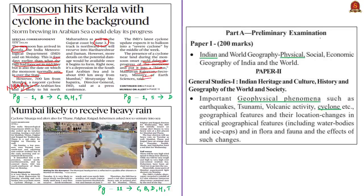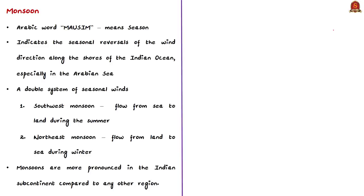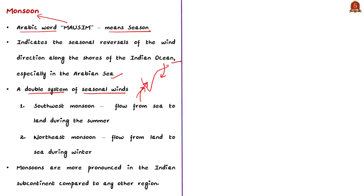The word 'monsoon' originated from the Arabic word 'mausim' or 'mausam', meaning season. Monsoon is mostly related to seasonal reversals of wind direction along the shores of the Indian Ocean, especially in the Arabian Sea. The monsoon blows from the southwest during one half of the year and from the northeast during the other half. Simply put, monsoons are seasonal winds which reverse direction with the change of season — a double system of seasonal winds: from sea to land during summer (southwest monsoon) and from land to sea during winter (northeast monsoon).